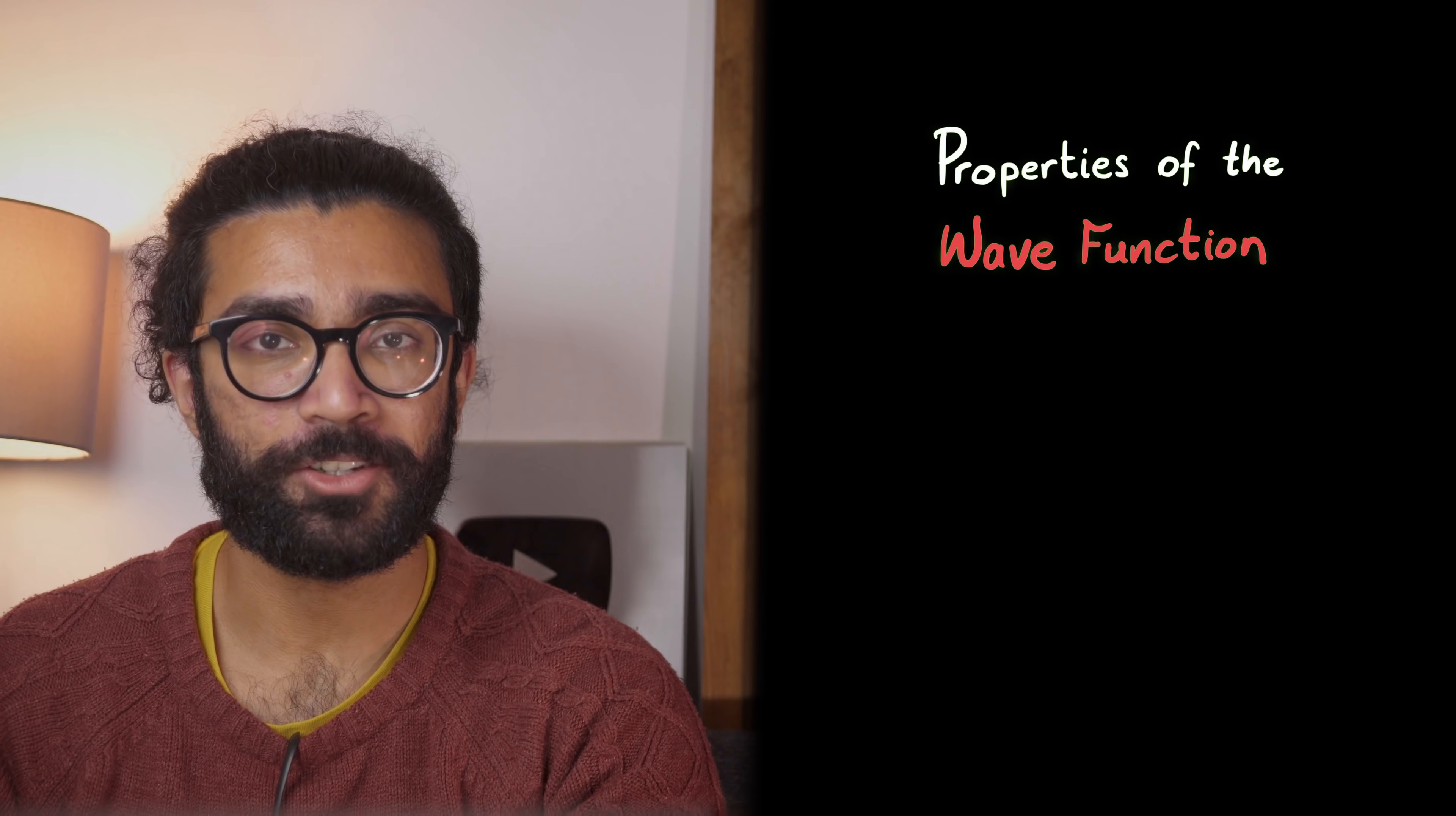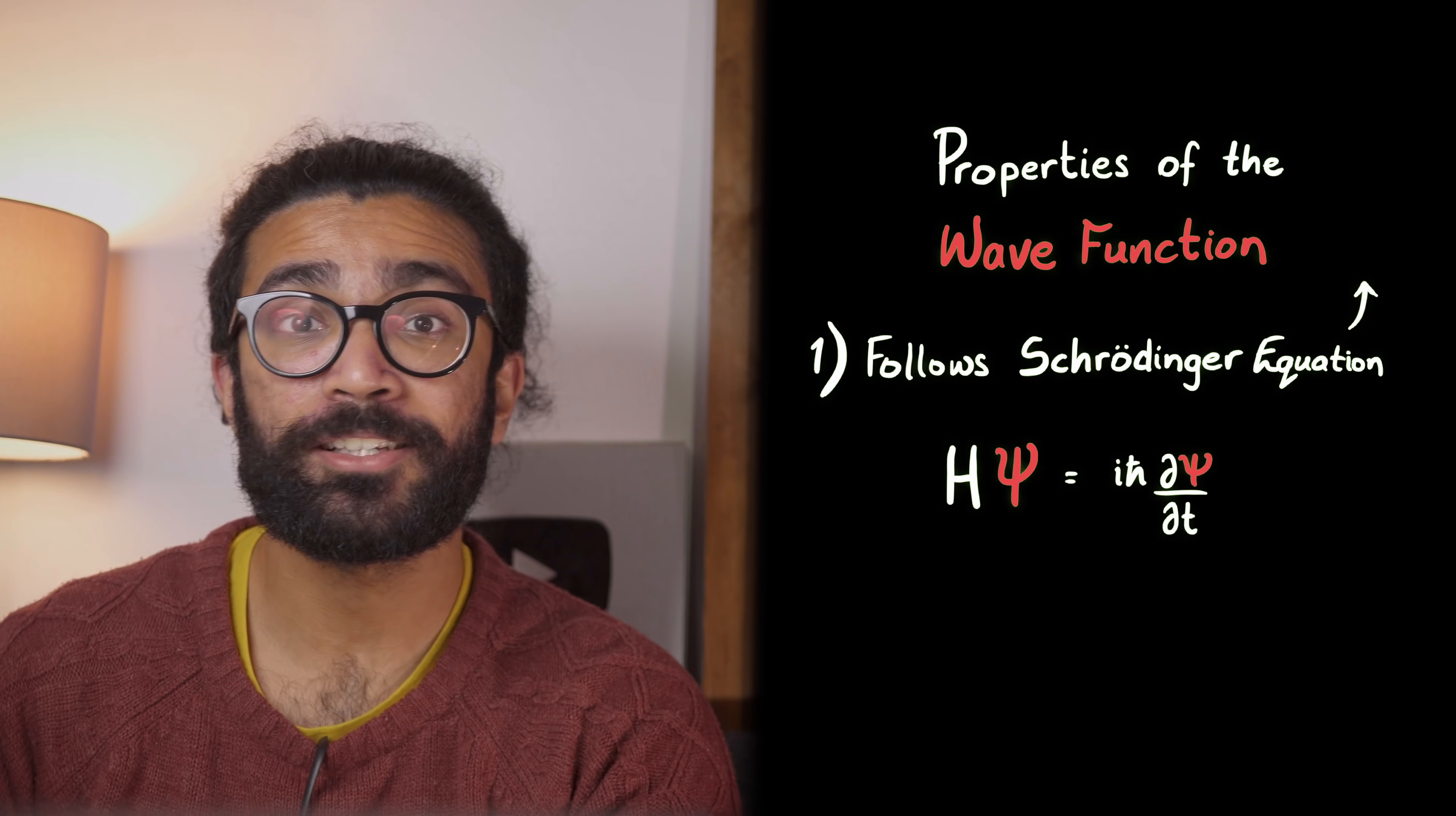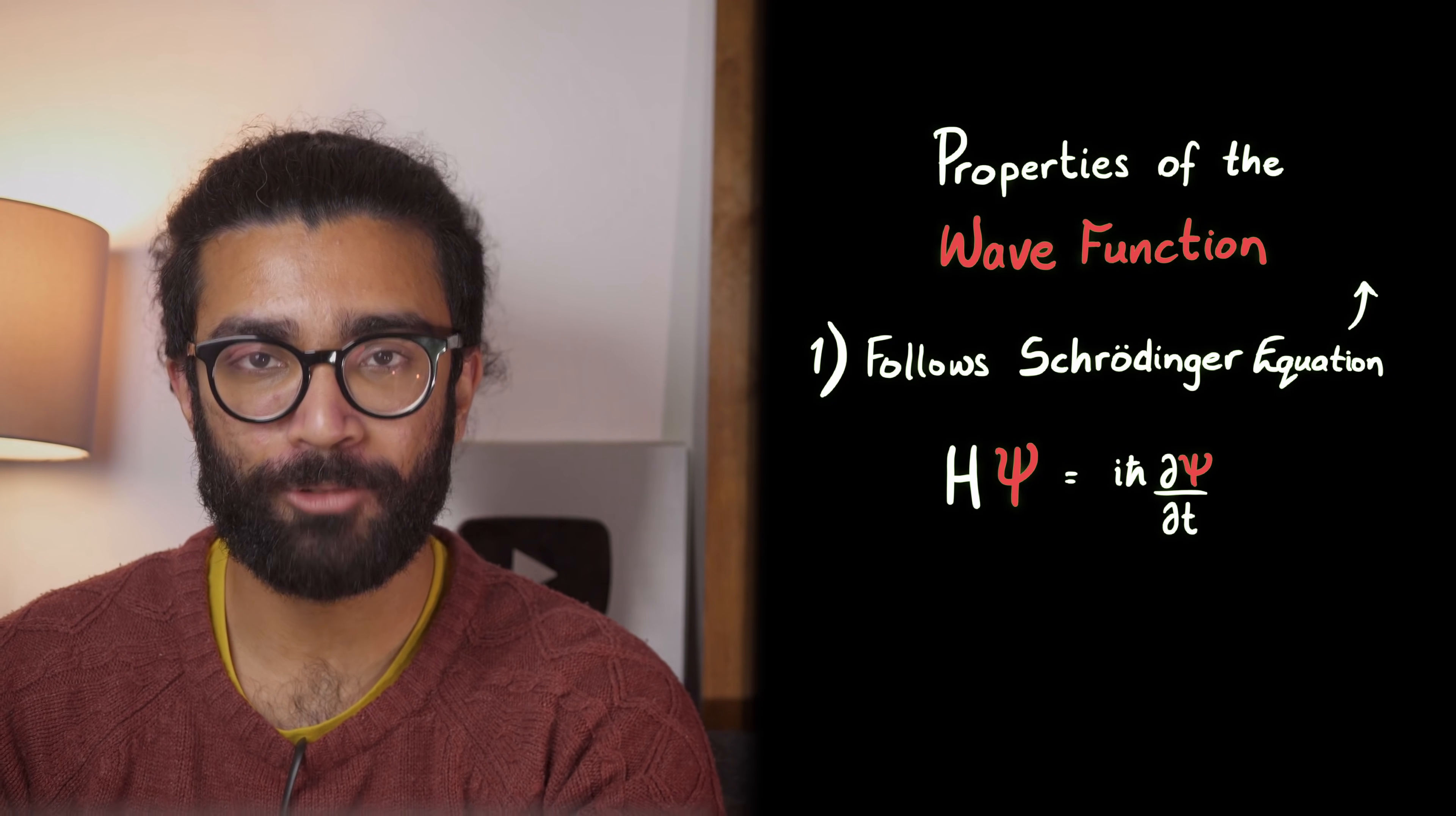Anyway, so let's quickly discuss some of the properties of this wave function. The first property is that it follows what's known as the Schrödinger equation. This is the main equation in quantum mechanics. And essentially, what makes a function quantum mechanical in the first place is the fact that it changes over time and space, as given by this equation. Another property of the wave function is one that we've seen already.